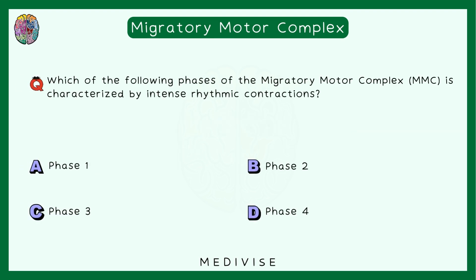Try to pause the video and answer these questions yourself before comparing with the answers. Question: Which phase of the migratory motor complex is characterized by intense rhythmic contractions — phase 1, 2, 3, or 4? The correct answer is phase 3, where the strongest contractions take place.